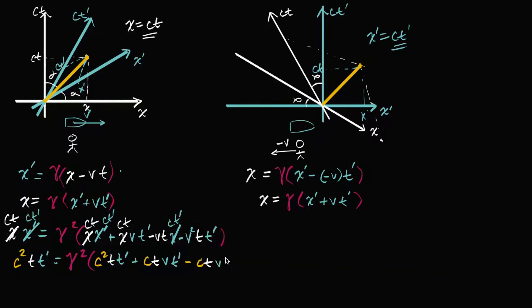I wrote this v in blue just so it matches up with this. And then finally we have minus v squared times t times t prime. It doesn't look that much simpler but we're about to simplify it a good bit. And so we're gonna get these two middle terms cancel out. So plus ctv t prime minus ctv t prime, those are going to cancel out.